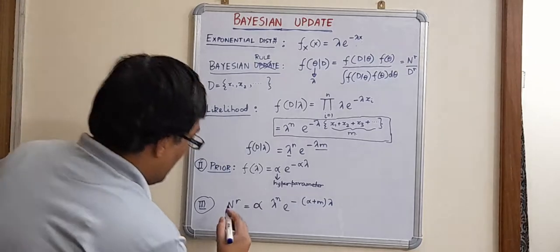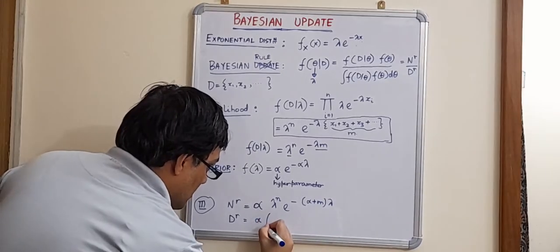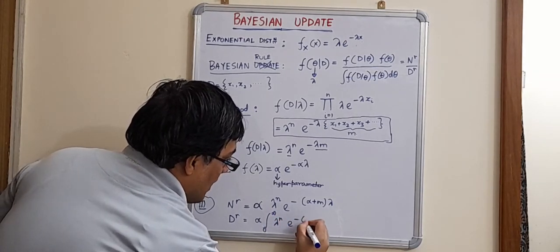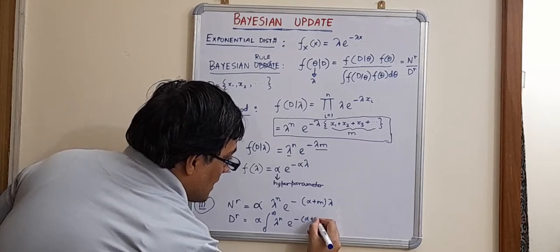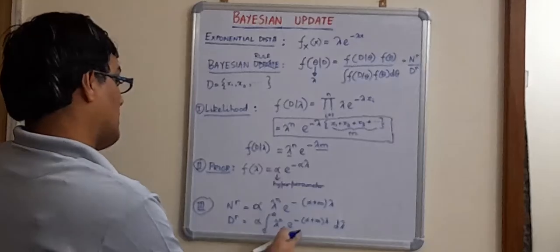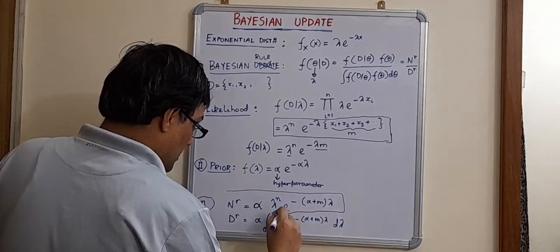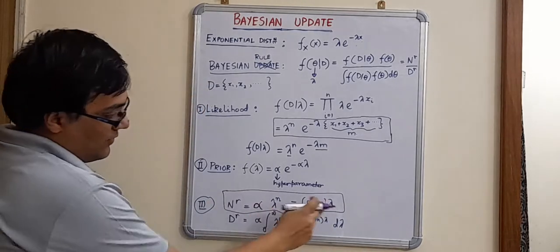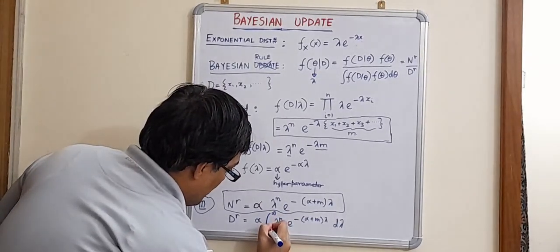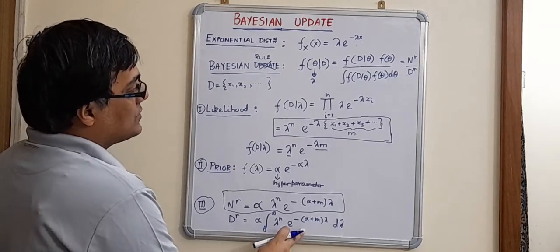And what will be the denominator? Denominator will be basically the integration. Alpha goes out because 0 to infinity lambda to the power n into e to the power minus alpha plus m lambda over d lambda. Now this is the denominator. Denominator is nothing but the integration of the numerator. Nothing else. That's the total probability. So basically, I'm just boxing it so that you can see the denominator and realize that it is nothing but this numerator which is integrated over d lambda. And in the next lecture, I'll show you how this integration is performed.